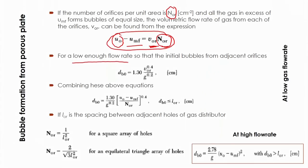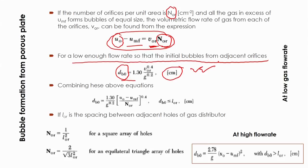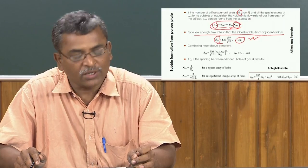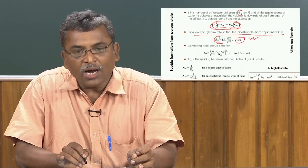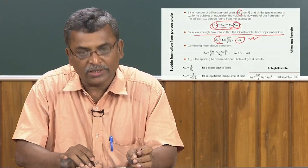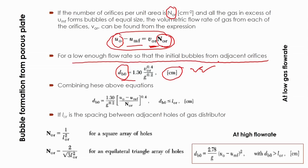For low gas flow rates, the initial bubble diameter DBO can be calculated as: DBO = 1.30 × VOR^0.4 / g^0.2, where VOR is the volumetric flow rate of gas through the orifice in centimeter cube per second and g is gravitational acceleration. By combining these equations, VOR can be substituted as (U₀ − UMF) / NOR, where U₀ − UMF is the effective gas velocity inside the fluidized bed. This gives the initial bubble diameter from the porous plate distributor.